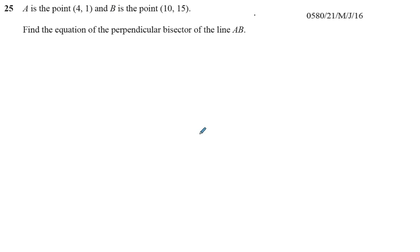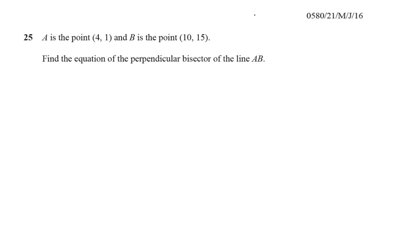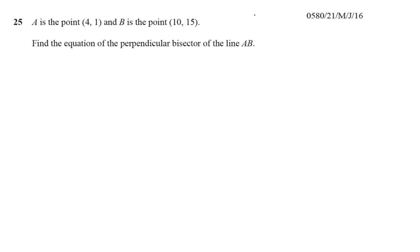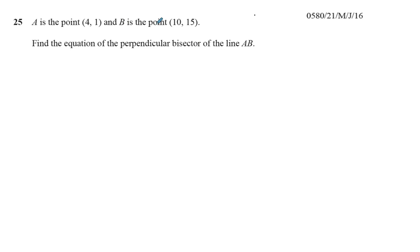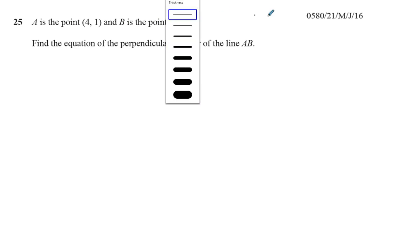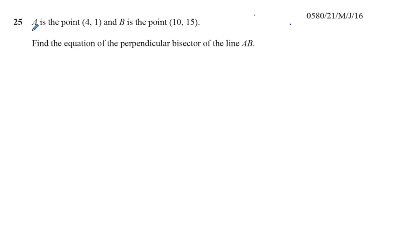In this question, we are asked to find the equation of the perpendicular bisector of the line AB. The line AB passes through the point A and the point B, and their coordinates are given. Point A is (4, 1) and point B is (10, 15). We've got to find the equation of the perpendicular bisector of the line AB.